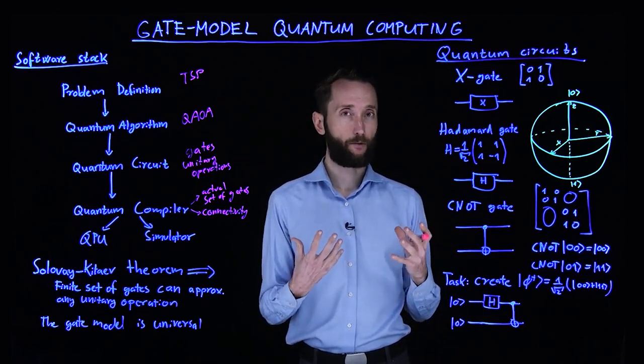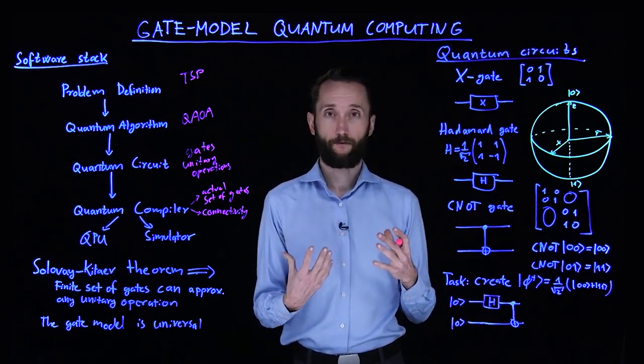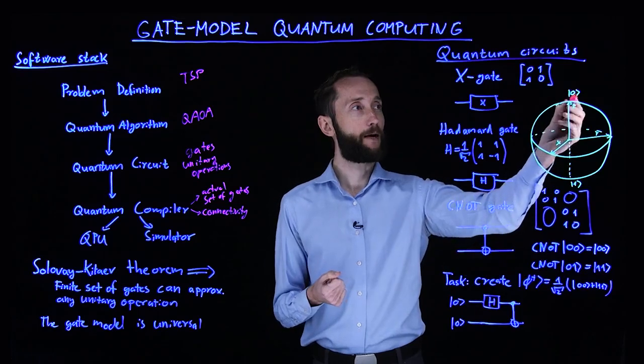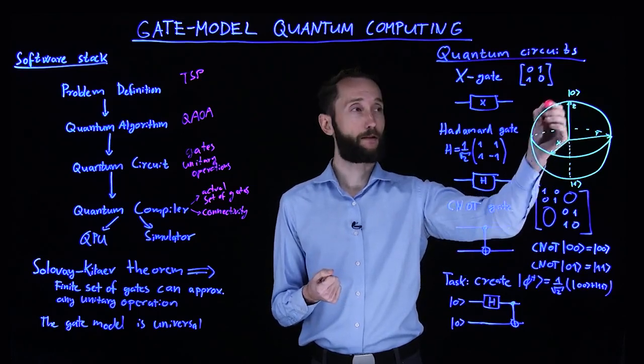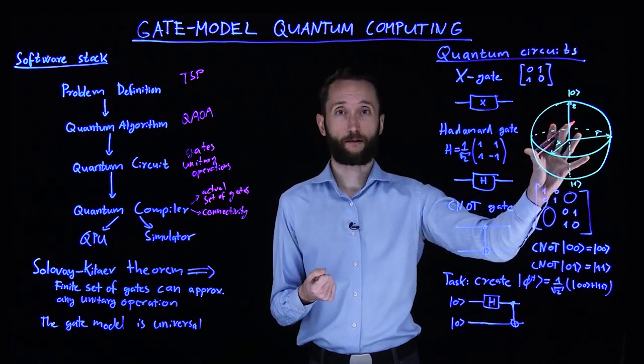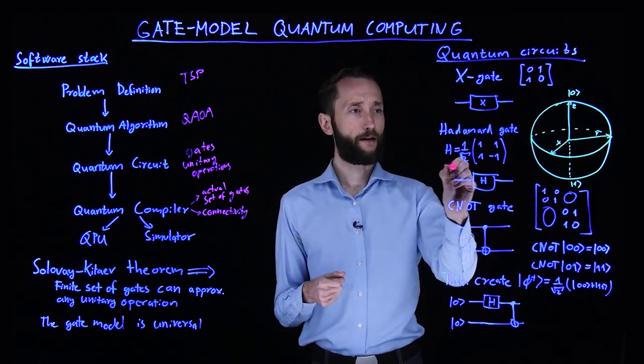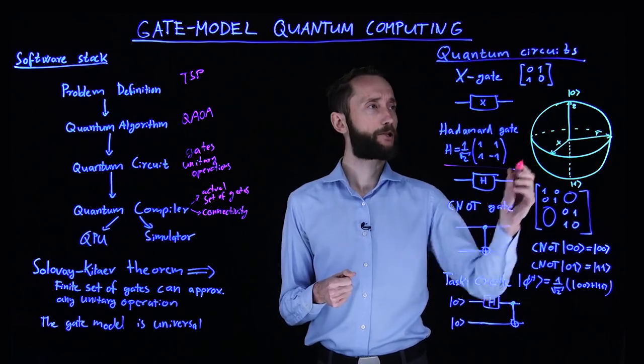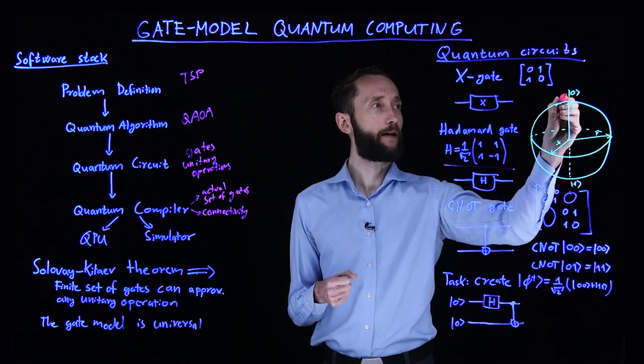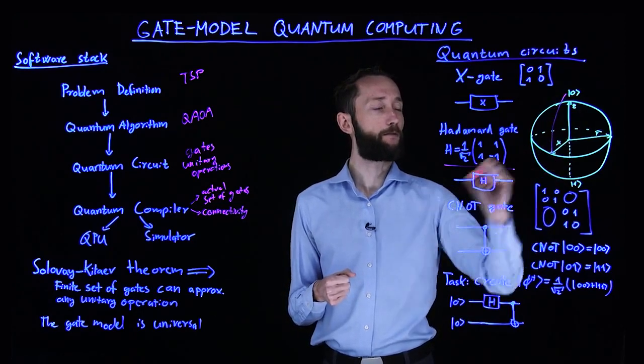But in a quantum computer, we have many single qubit operations. In fact, we have infinitely many, because we can map any qubit on the surface of the sphere, which contains many values. So another important operation is the Hadamard gate, which takes the zero ket and pushes it into the equal superposition.